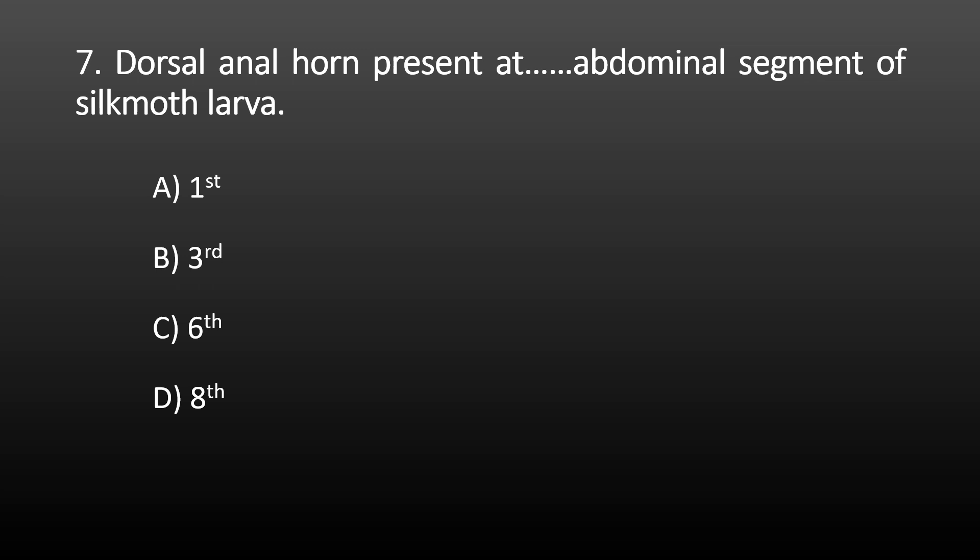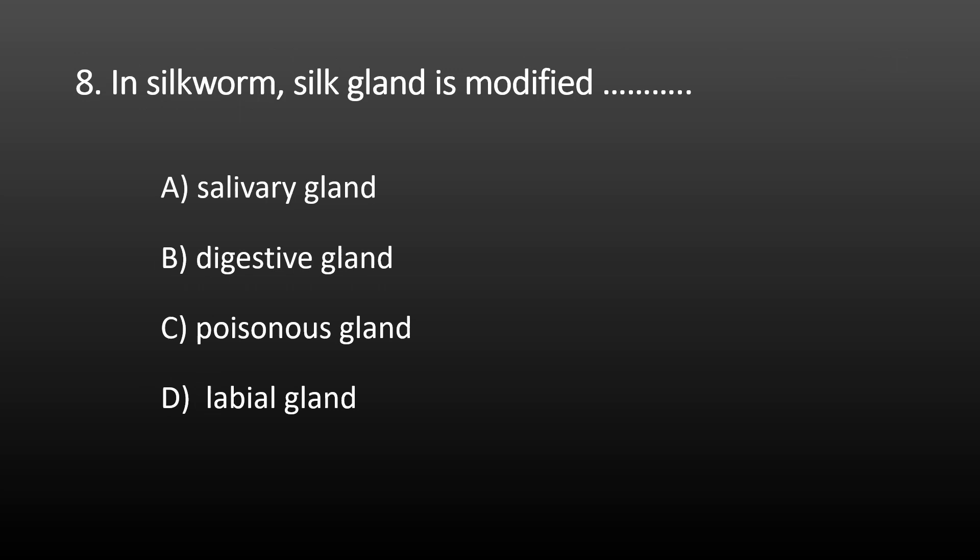Next MCQ: the dorsal anal horn is present at which abdominal segment of silkworm larvae? Options are: first, third, sixth, and eighth. The correct answer is eighth. The dorsal anal horn is present at the eighth abdominal segment of silkworm larvae.